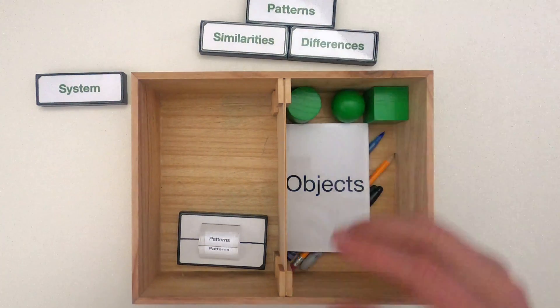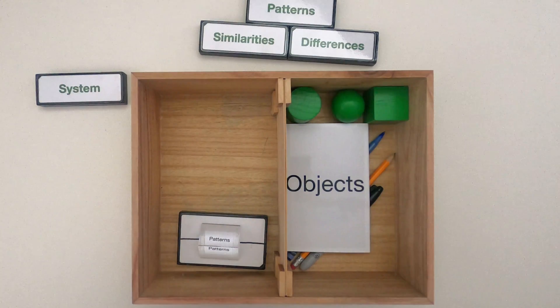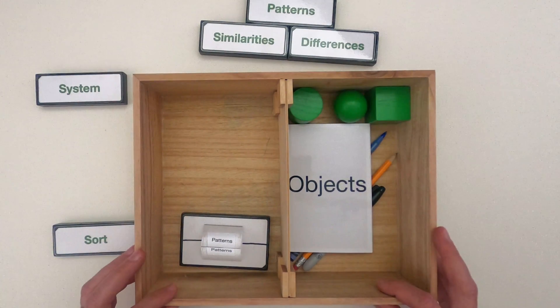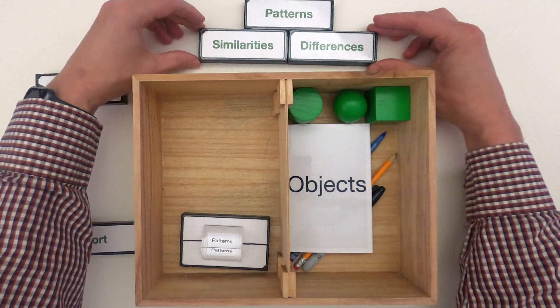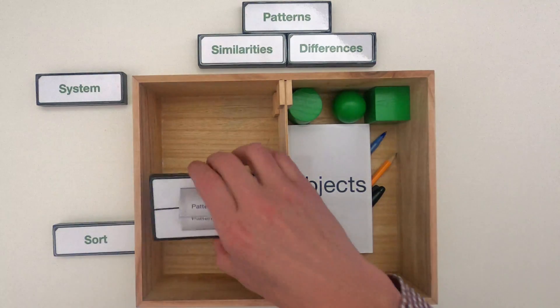Because by looking for similarities and differences, we can better understand the system and we can eventually start to sort the different parts of the system, classify them, and more importantly analyze.